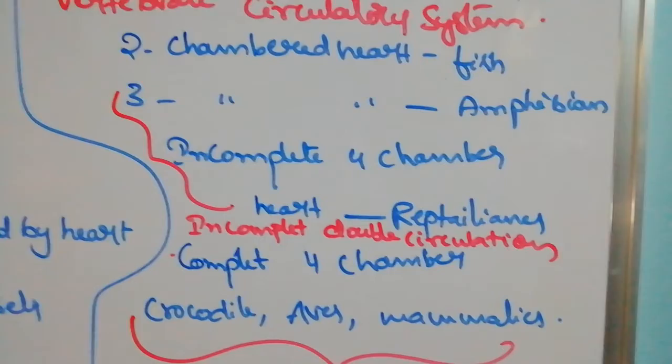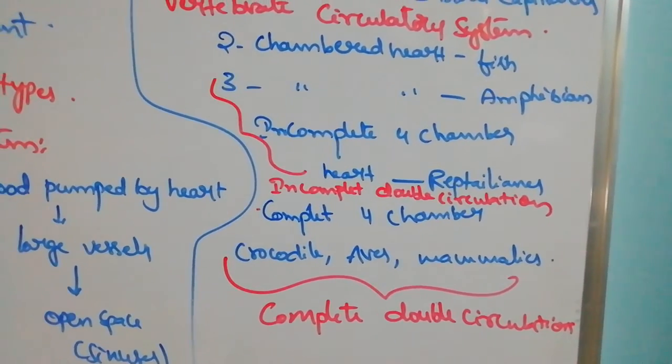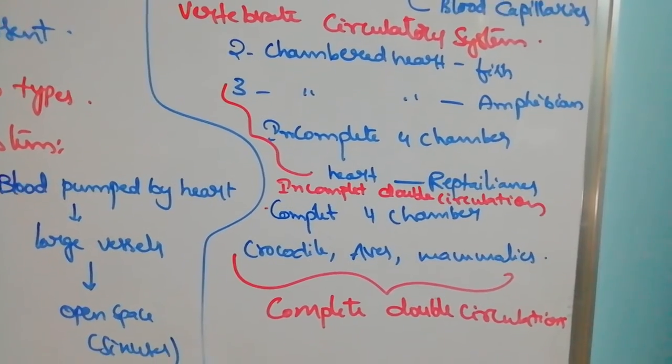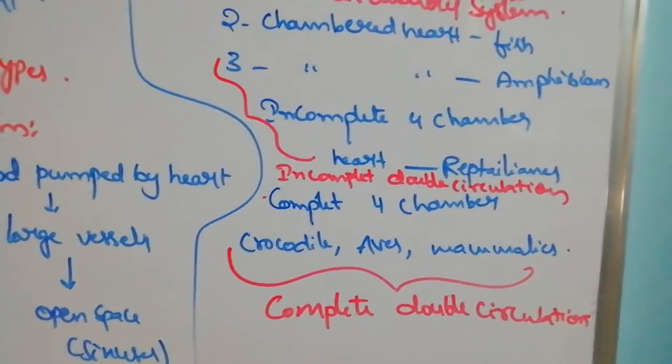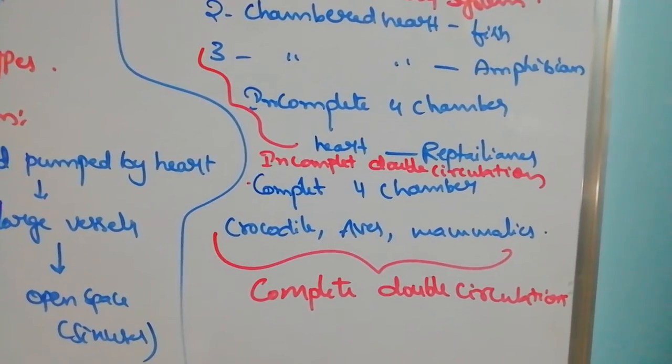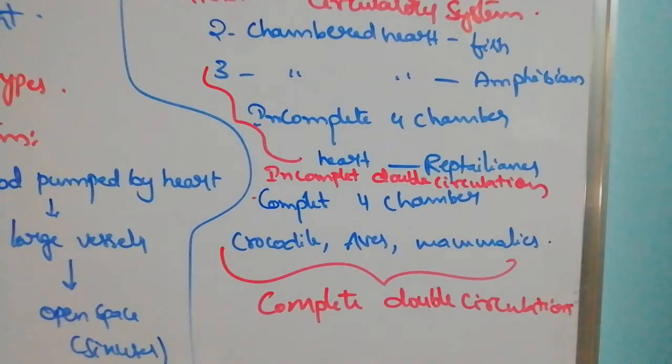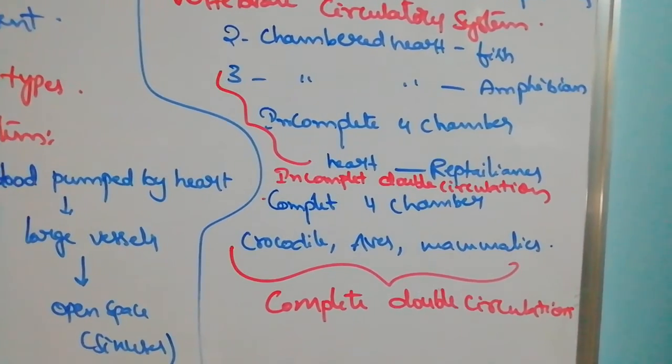In amphibians three-chambered heart is present. For example, frog has three chambers. Remaining reptiles have incomplete four chambers, where the ventricle is not completely divided. Exception is crocodile. So three-chambered and incomplete four-chambered have incomplete double circulation.